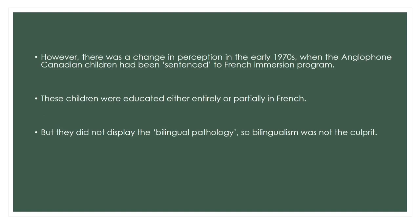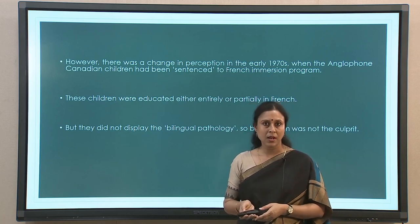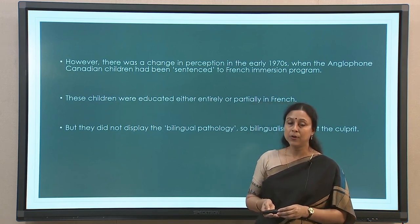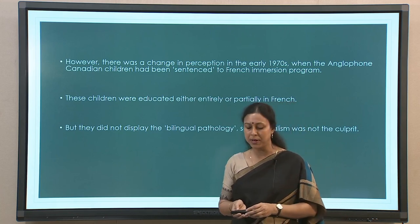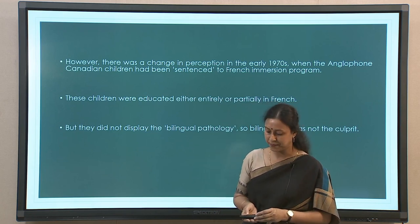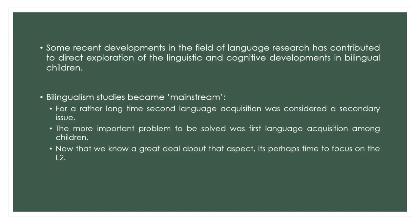This view continued for some time; however, there was a major change that happened in the 1970s when Anglophone Canadian children were made to go through an immersion program in the French language. In Canada there are Anglophone areas and Francophone areas, and in the Anglophone areas children were made to go through French immersion, meaning the entire education would be in and only in French. These children now had a similar situation as the North American immigrant children — one language at home, another in the school environment. However, the interesting outcome was that these children did not have the same kind of problem or what is called bilingual pathology, and bilingualism was cleansed of its pathological stigma.